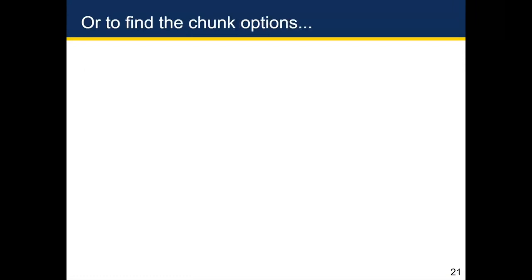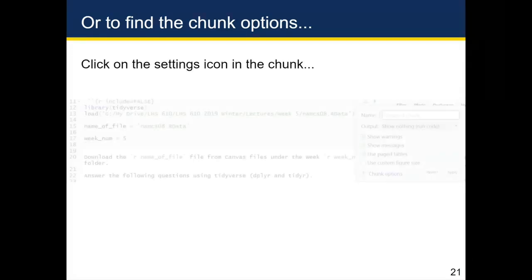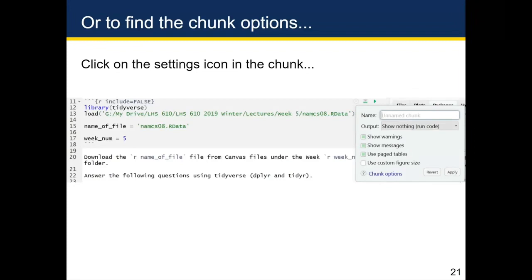If you forget the chunk options and want plain English explanations, you can click on the settings icon in the chunk — notice this settings icon appears next to the play button inside the actual chunk. You can then click 'Show nothing but run the code' in the output select menu, and that will translate into include equals false.